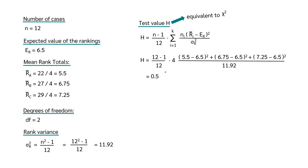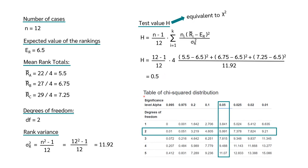This H value corresponds to the chi-square value, so we can read the critical chi-square value from the table of critical chi-square values, which you can find at datadab.net. With 2 degrees of freedom and a significance level of 0.05, we get a critical chi-square value of 5.991. Our H value of 0.5 is smaller than this critical value, so based on our example data, the null hypothesis is retained.